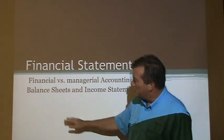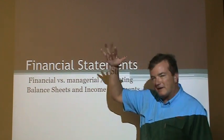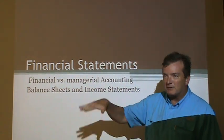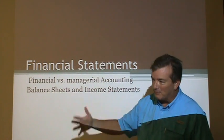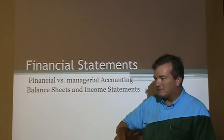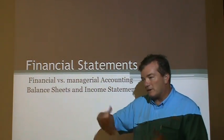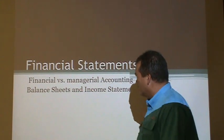A balance sheet is going to be a list of all the assets a company has minus all the liabilities a company has — how much stuff does it have, minus how much stuff does it owe, and then whatever's left over, that's the value of the accounting.